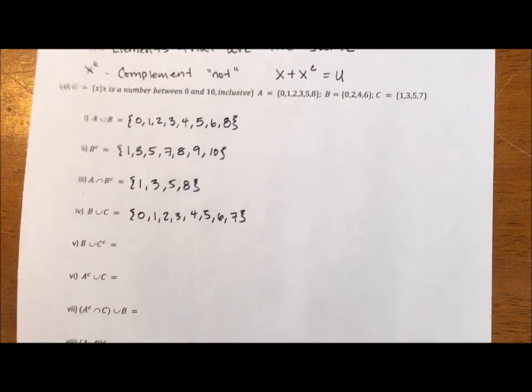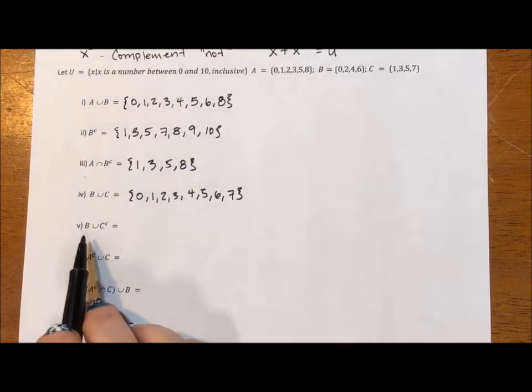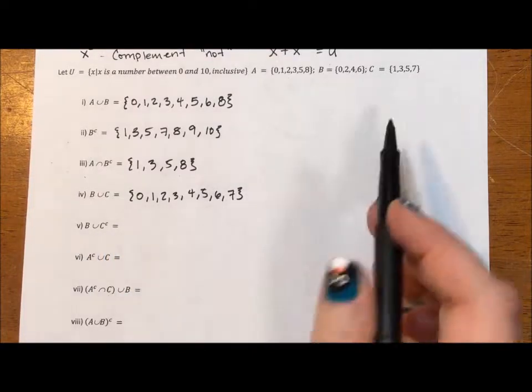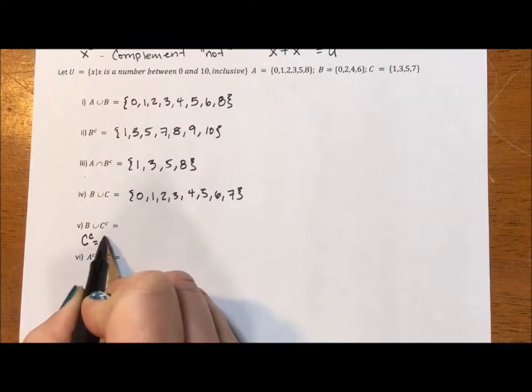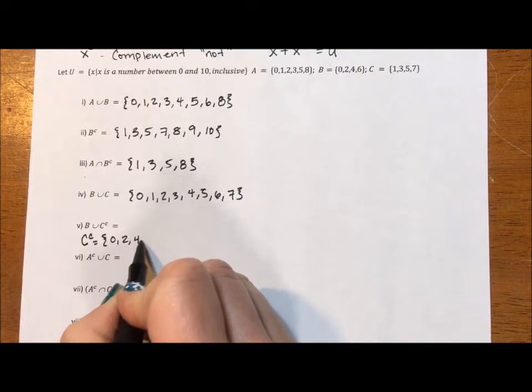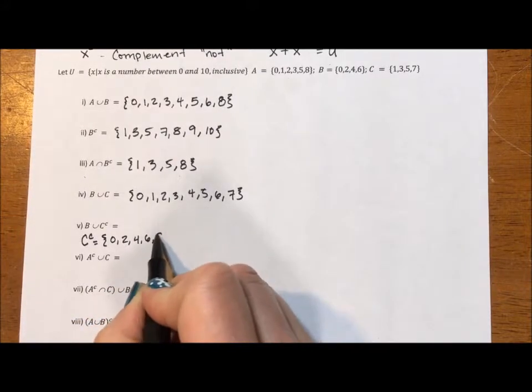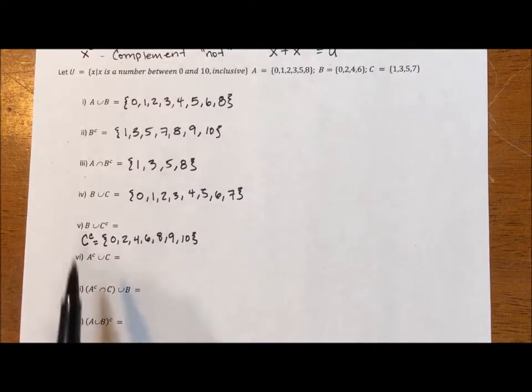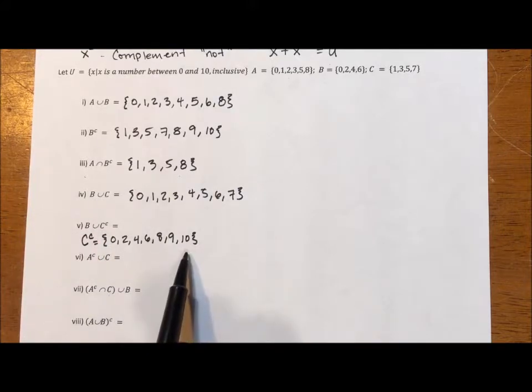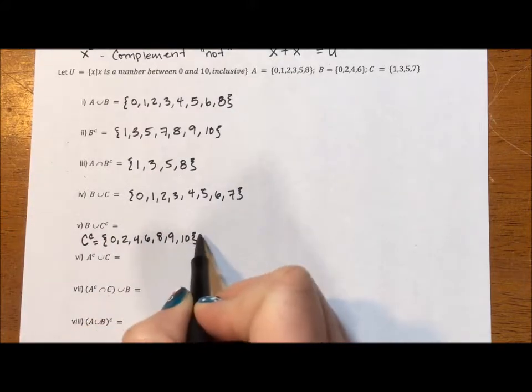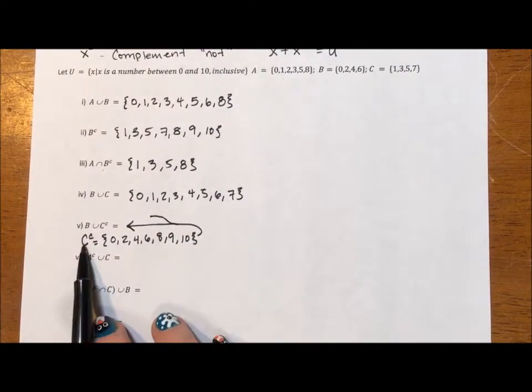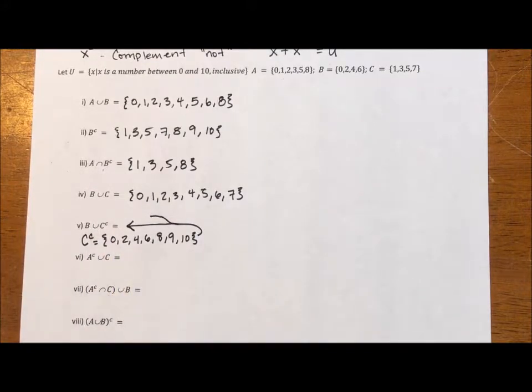Next, we're being asked about B union everything together with the complement of C. Like I said, I want to know what the complement of C is. So I'm going to quickly write the complement of C down. So that's going to be 0, 2, 4, 5, 6, 7, 8, 9, 10. And because B is a subset of this, 0, 2, 4, 6, B is completely contained in the complement of C, this actually just becomes the answer to the question. The C complement is the union of B and C complement.